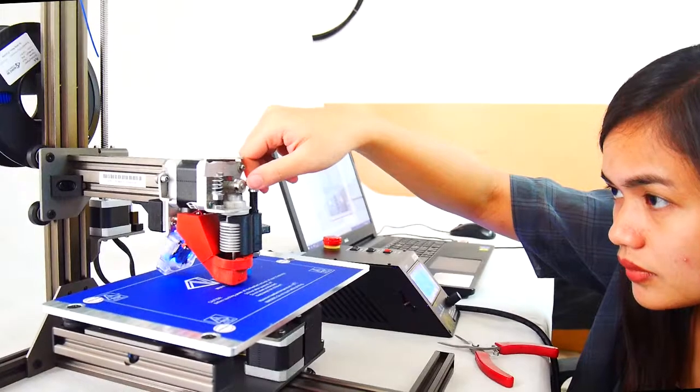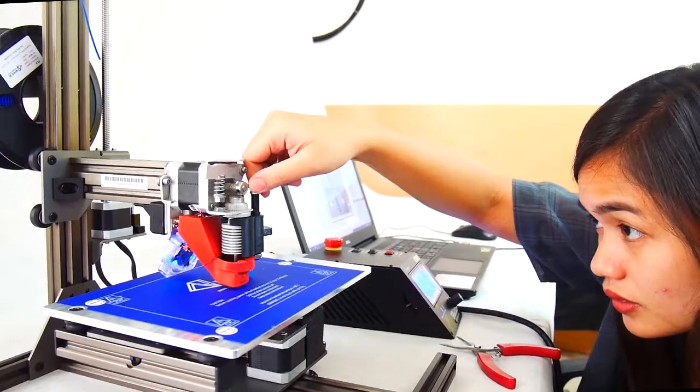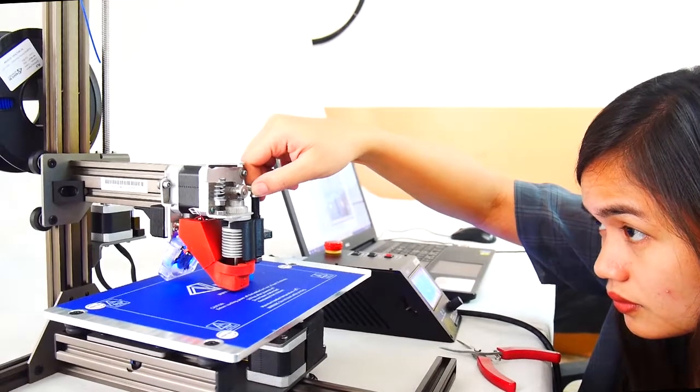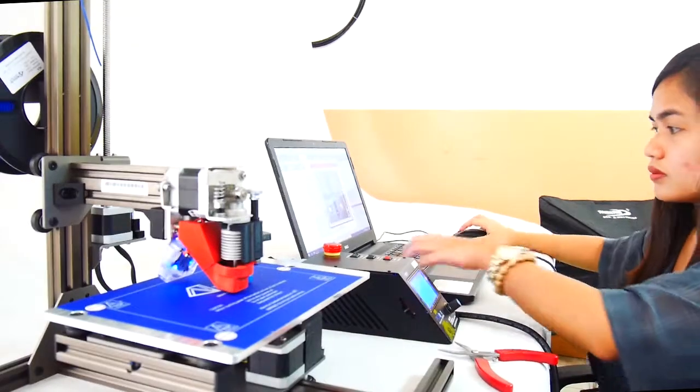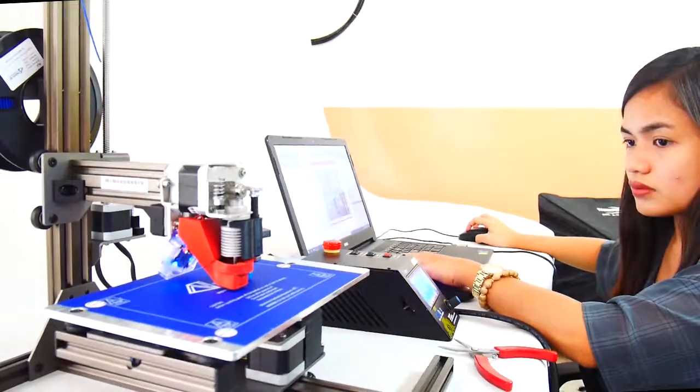Next, level Z-axis using auto-level module. Rotate auto-level module's knob clockwise to move the extruder down. Then click Z-home button.